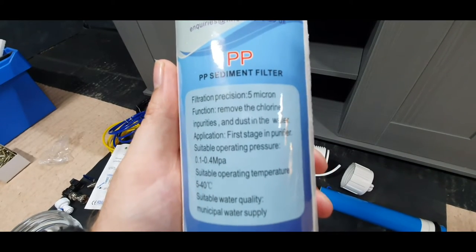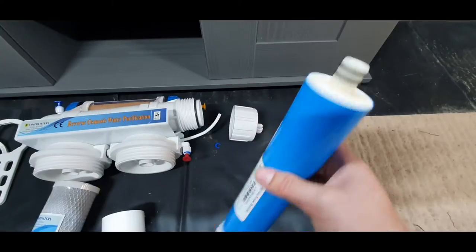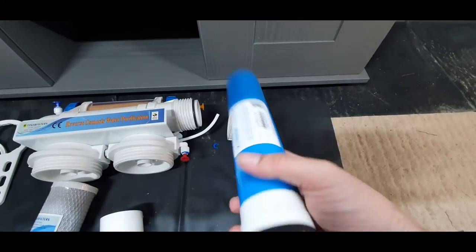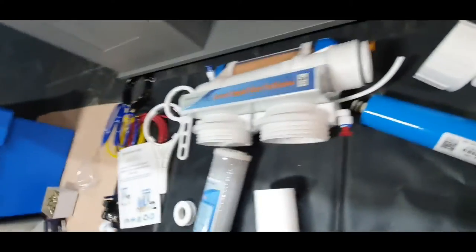And the other one, we've got the mesh filter, again 5 micron, and it tells you it removes chlorine, impurities, and dust. In the top section we've got the RO membrane itself. This is where a lot of the fine filtration happens, all of the extra stuff gets taken out, and that just fits straight into that part there.